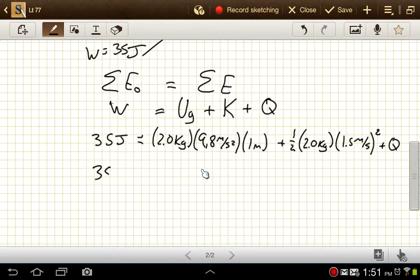So 35 joules is equal to, well, 2 times 1 times 9.8, that'd be 19.6 joules, plus, 1 half times 2 is 1, 1.5 squared is 2.25, so 2.25 joules, plus Q.